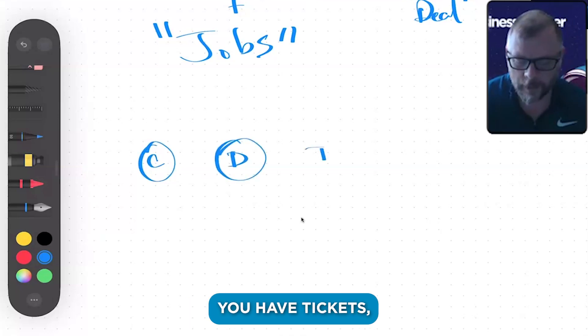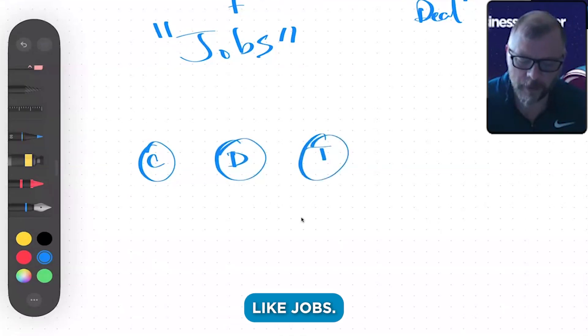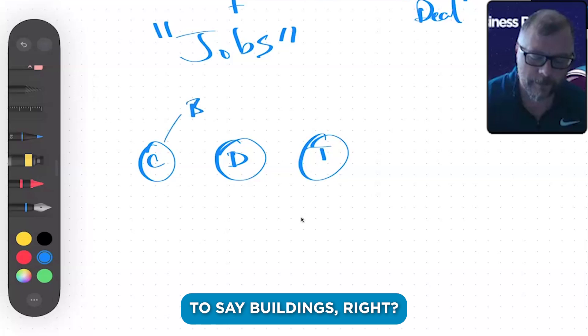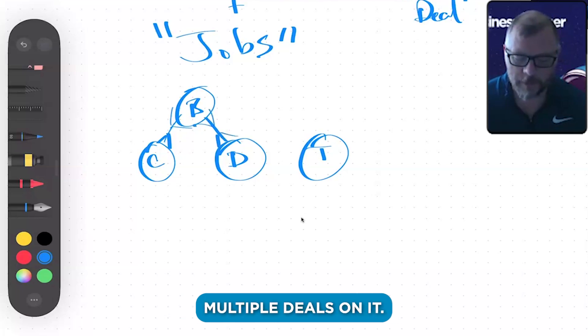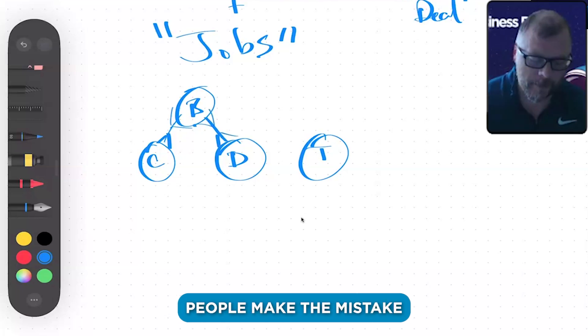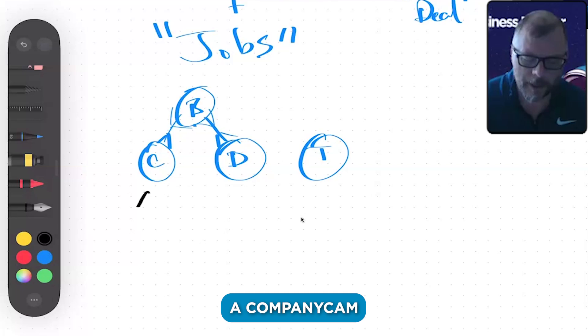A building could have one or many contacts, and a contact could own one or many buildings. A deal could be related to one building or it could be related to multiple buildings, and a building could eventually have multiple deals on it. But a lot of times people make the mistake of creating a CompanyCam for a contact or they make a CompanyCam for a deal, but that's wrong.